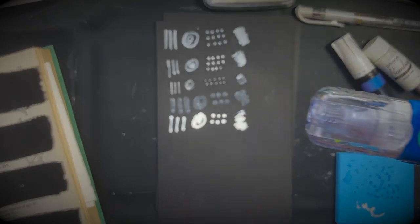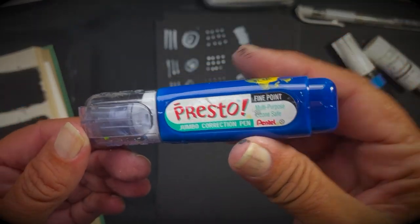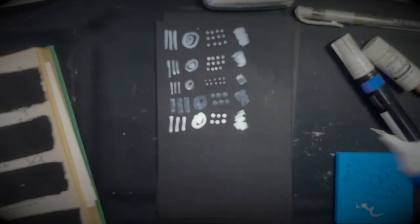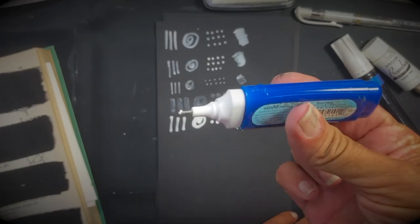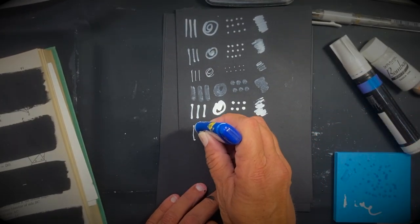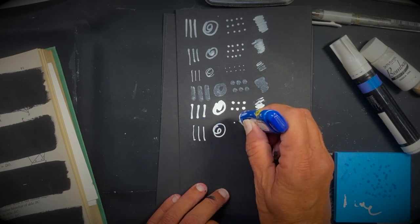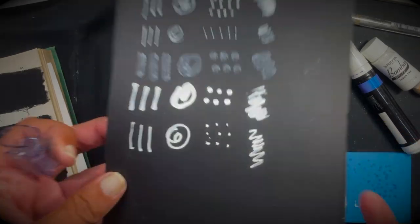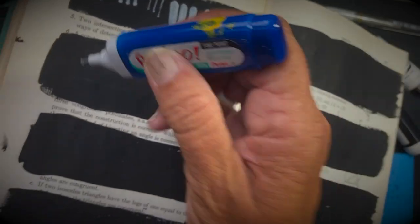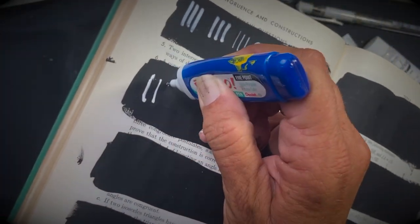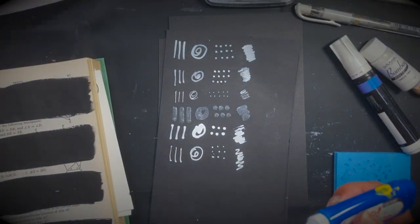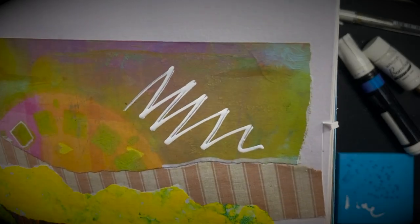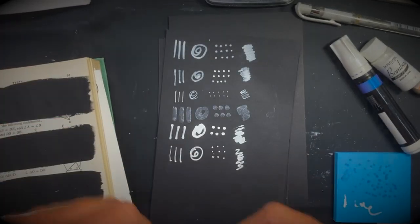What I've been using lately is another whiteout correction fluid by Presto jumbo correction pen. Shake it up. Make sure you have the tip cleaned off a little bit. You do squeeze this one as well to control the flow. A little bit smaller, kind of more controllable nib than the other one. So that is the Presto jumbo correction pen.